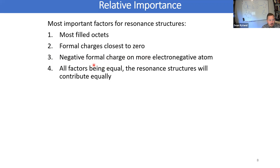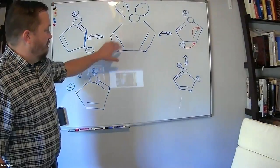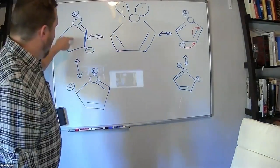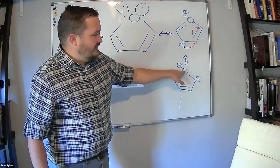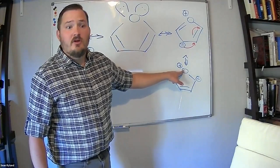All other things being equal, if we're going to have a formal charge, if we have a choice between putting the negative formal charge on the more electronegative atom versus a less electronegative one, we will generally prefer the more electronegative atom. And if everything looks equally likely, then the resonance structures contribute equally.